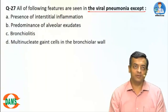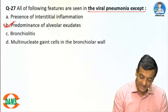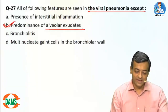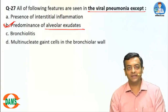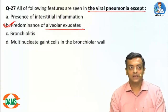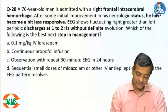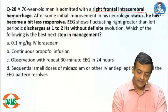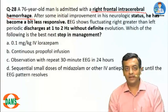Question 27: All of the following features are seen in viral pneumonia, except presence of alveolar exudates. Viral pneumonia is typically different from bacterial pneumonia. Presence of alveolar exudates is a feature more of a bacterial infection than a viral infection.